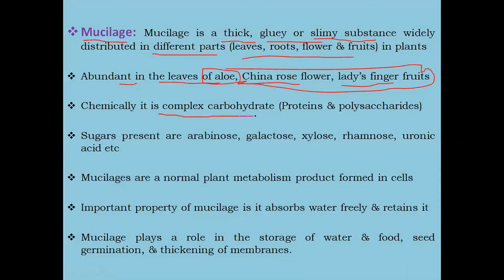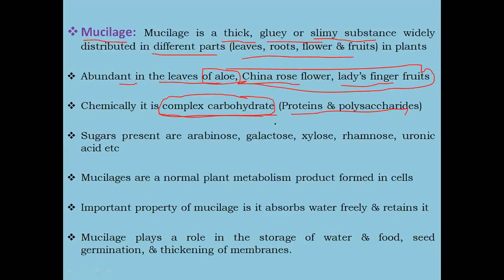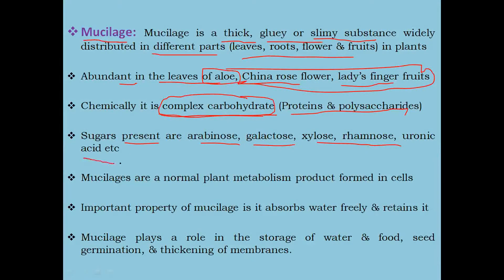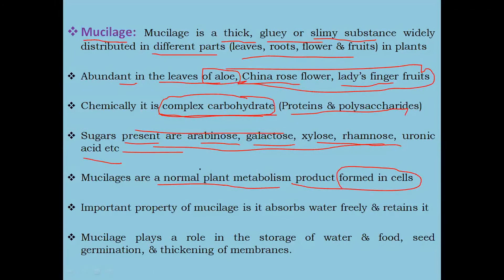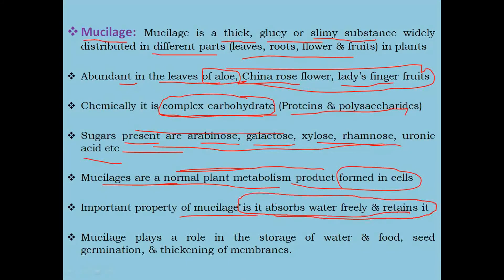Chemically, mucilage is a complex carbohydrate, which means it contains different groups, for example proteins and polysaccharides. The sugars present in mucilage are arabinose, galactose, xylose, rhamnose, and uronic acids. Mucilage is a normal plant metabolism product formed in the cells, not due to injury. An important property of mucilage is that it absorbs water freely and retains it.